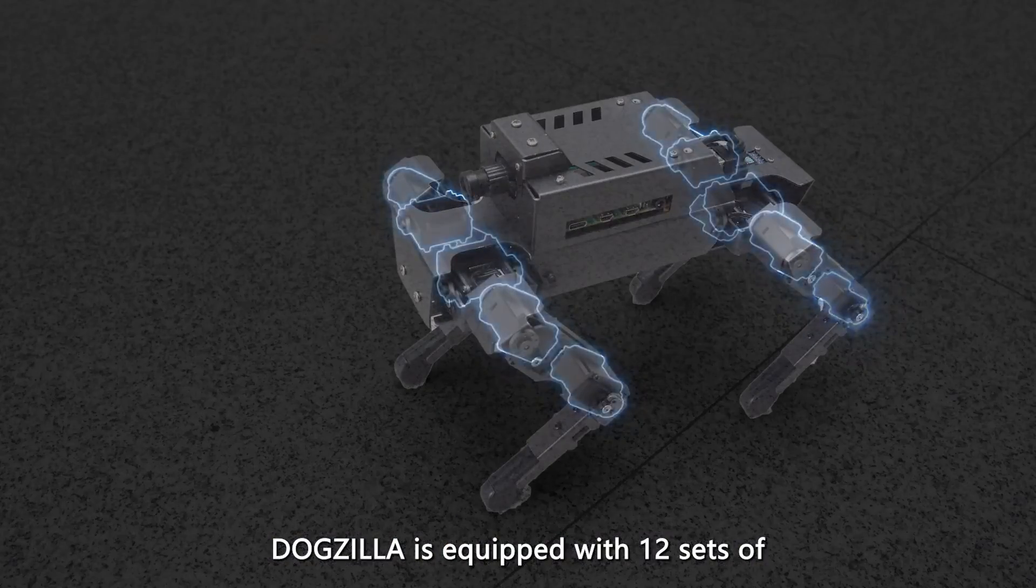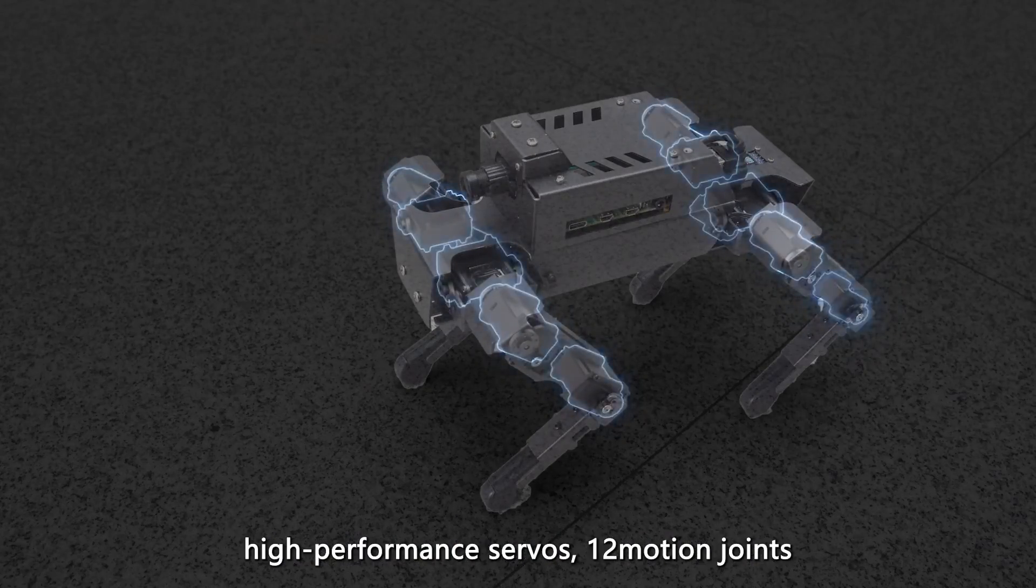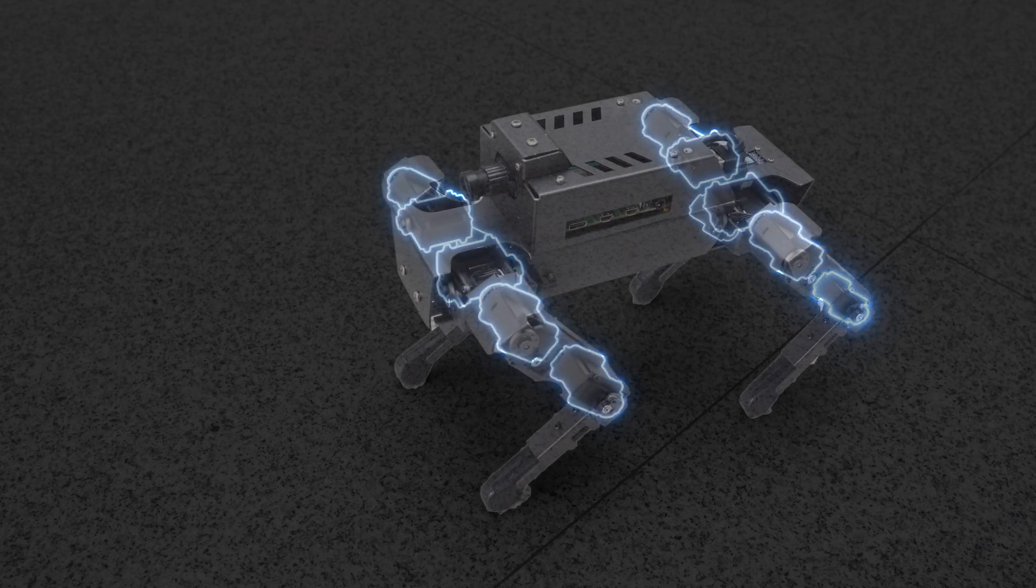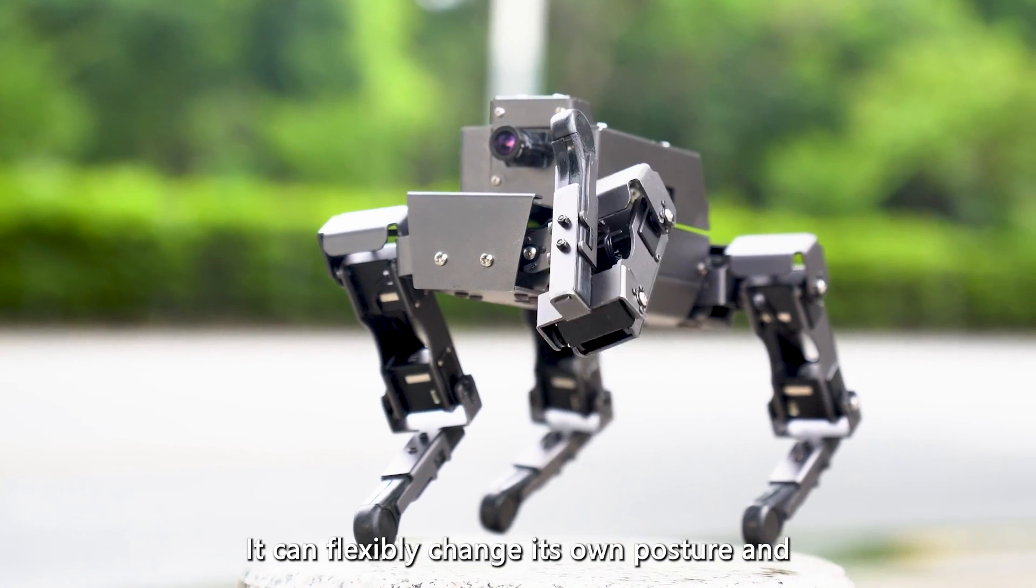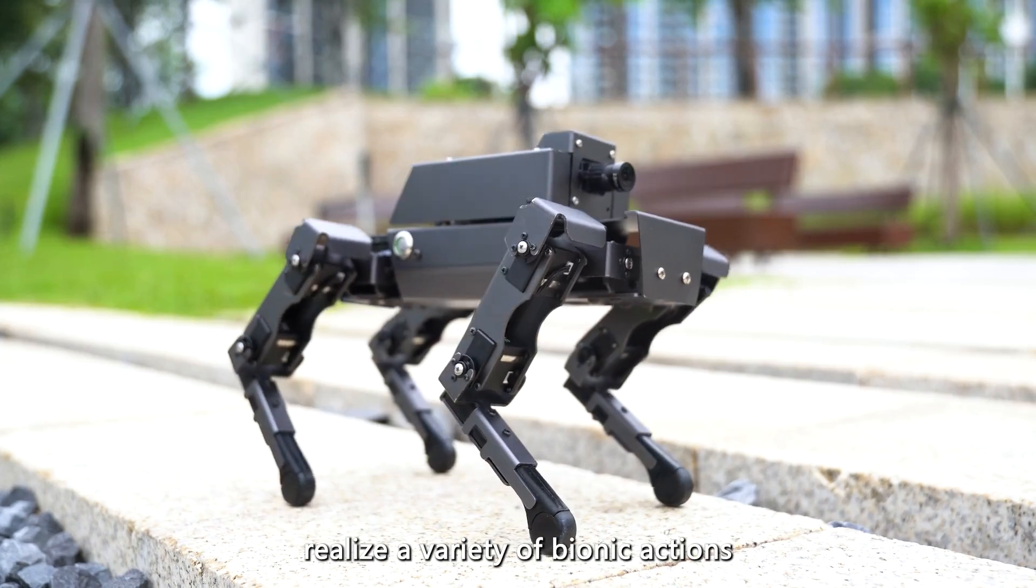Dogzilla is equipped with 12 sets of high-performance servos and 12 motion joints. It can flexibly change its own posture and realize a variety of bionic actions.